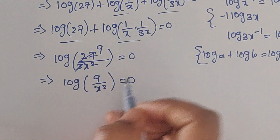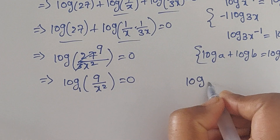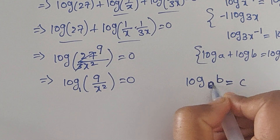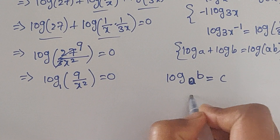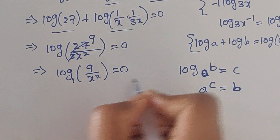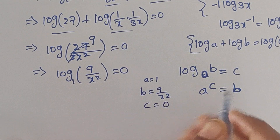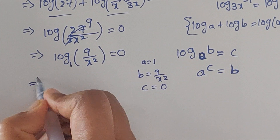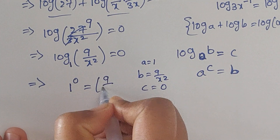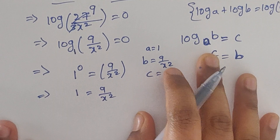Now we can see this is in the form of log base a of b equals c, which gives a to the power of c equals b. Here a equals 1, b equals 9 over x², and c equals 0. Using this formula: 1 to the power of 0 equals 9 over x².